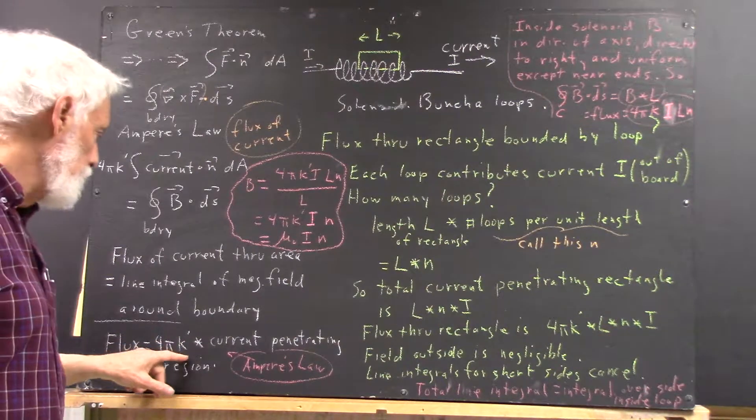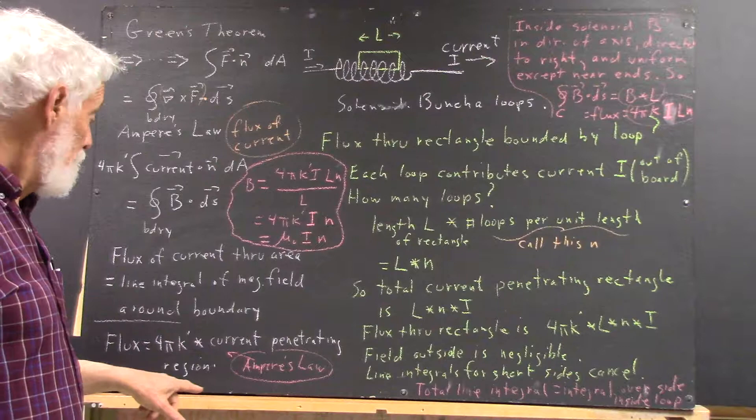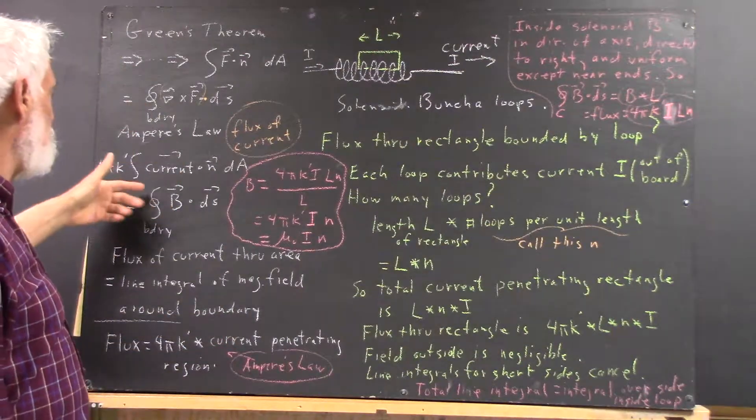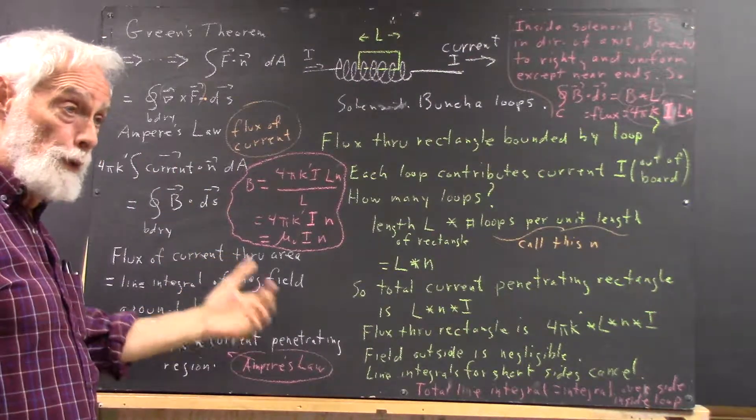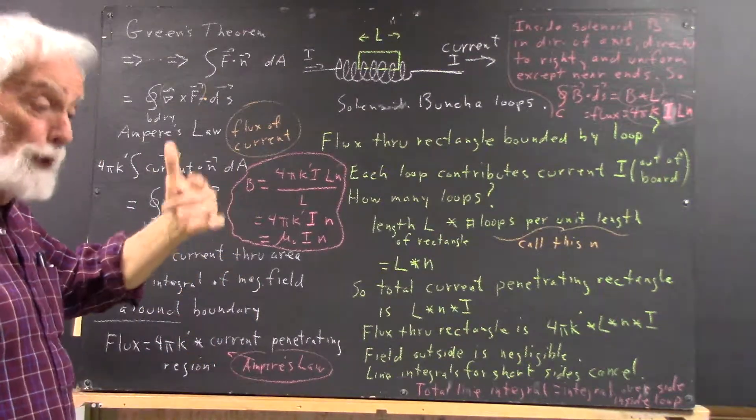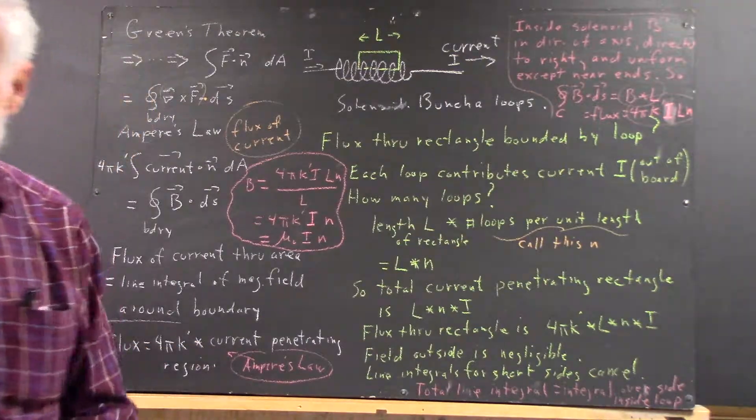The flux is 4πk' times the current penetrating the region, which is what you get by the integral of the current dotted with the normal vector. We're going to set up a region where the current penetrates the region perpendicular to the region. And I put an arrow here on Ampere's Law.